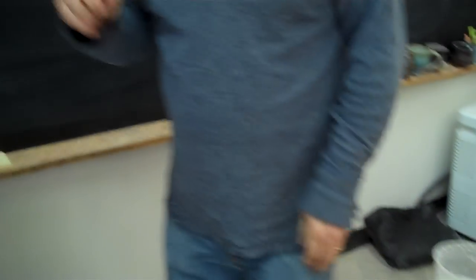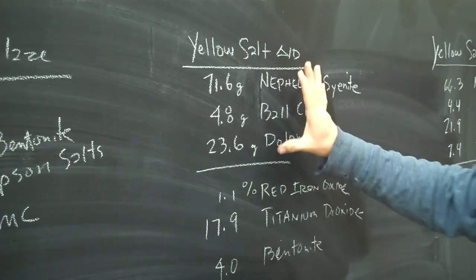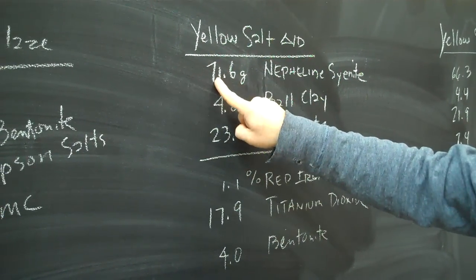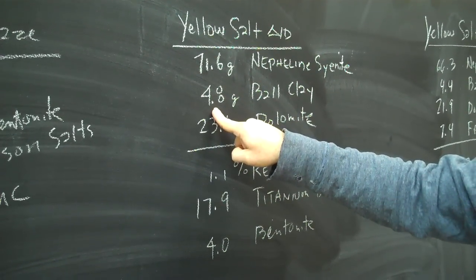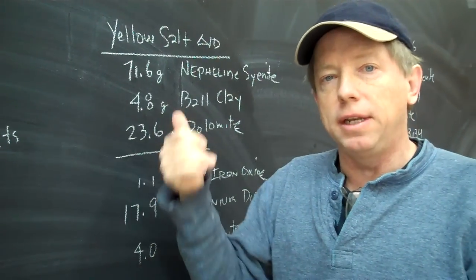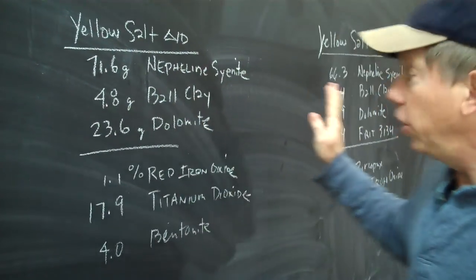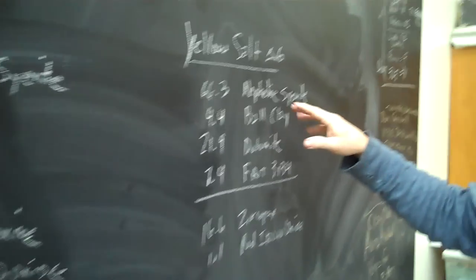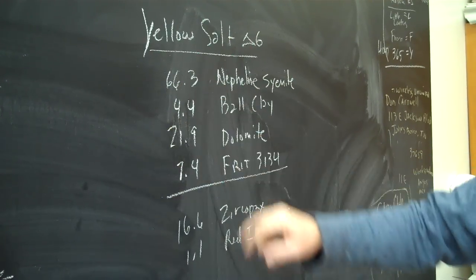Let me just show you now reasons how you would know that a glaze would deflocculate. This is a glaze called yellow salt and it has 72% nefsi and under 5% clay. So it's got soluble sodium in the nefsi and it's got low clay. And here's a cone 6 recipe which is just that yellow salt recipe with frit. But it's also low clay, high nefsi.